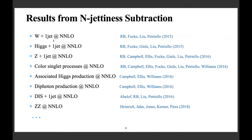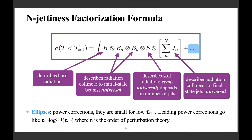This method has been successfully used to calculate many processes, including Higgs plus jet, vector boson plus jet, color singlet processes, associated Higgs production, diphoton production, DIS plus jet, and ZZ production.